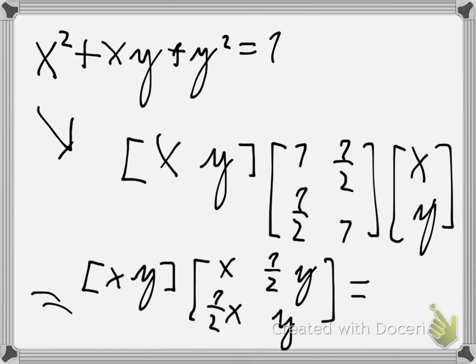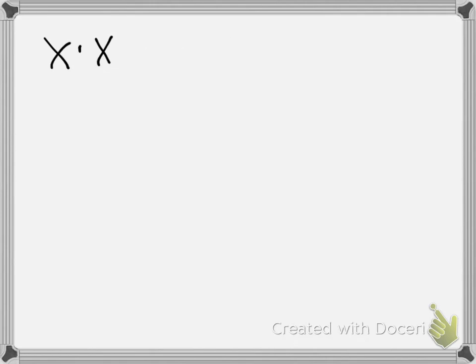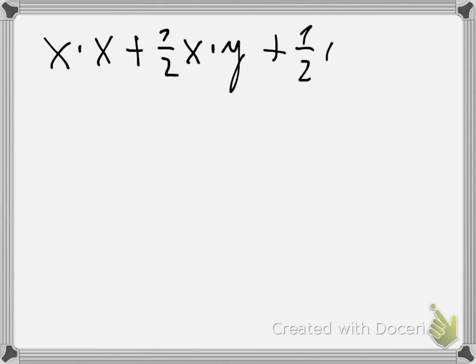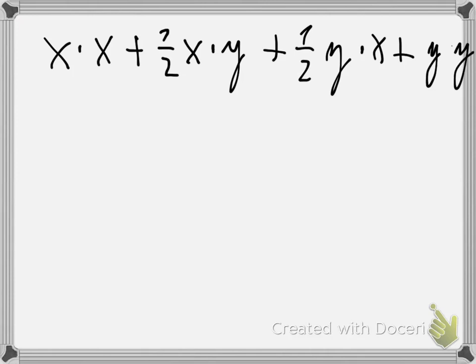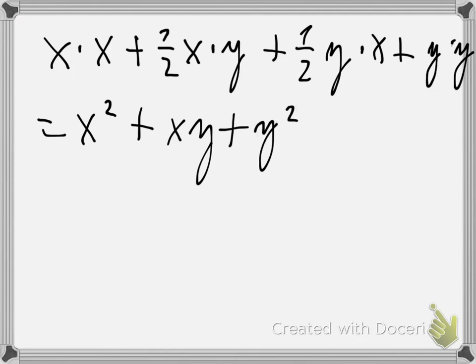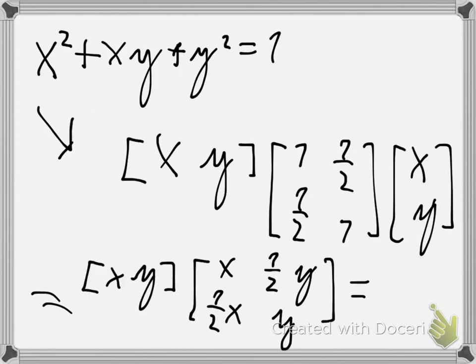If you multiply that out, you should get your equation back. You will get x times x plus 1 half times x times y plus 1 half y times x plus y times y. So you get x squared plus xy plus y squared, which should be equal to 1. So this is our matrix.